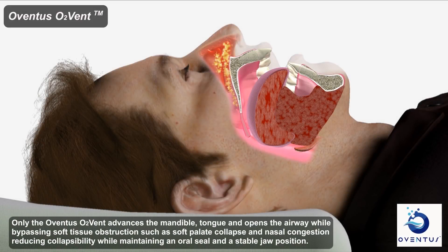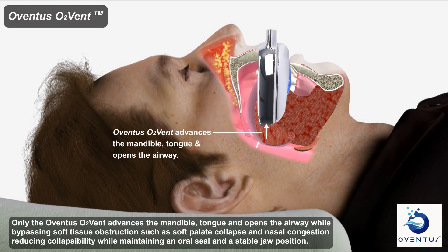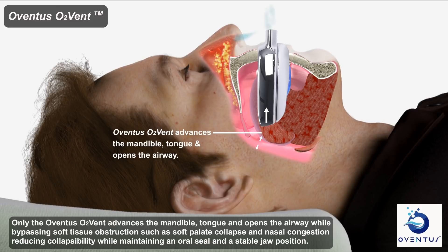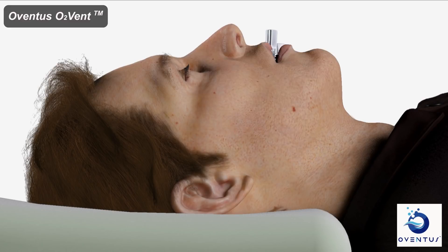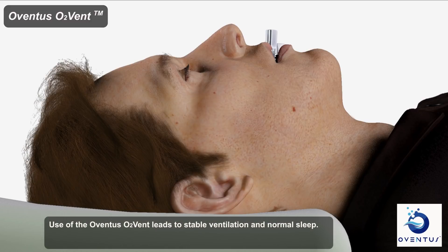Only the OVENTUS O2 Vent advances the mandible, tongue, and opens the airway, while bypassing soft tissue obstruction such as soft palate collapse and nasal congestion, reducing collapsibility while maintaining an oral seal and a stable jaw position. Use of the OVENTUS O2 Vent leads to stable ventilation and normal sleep.